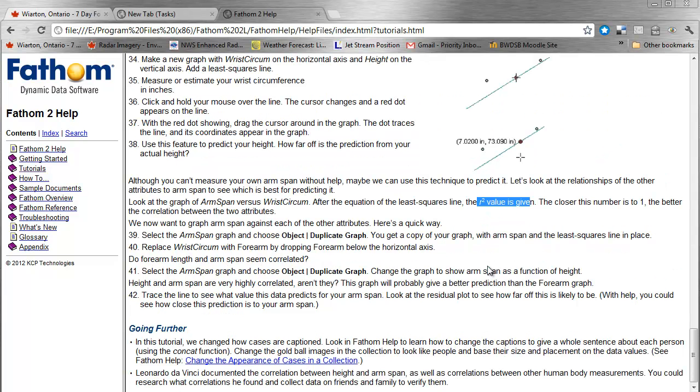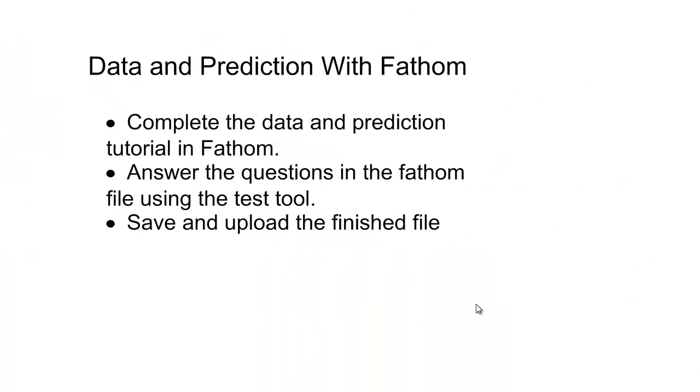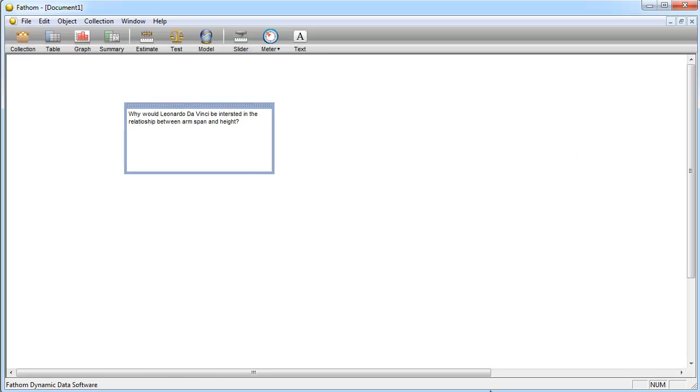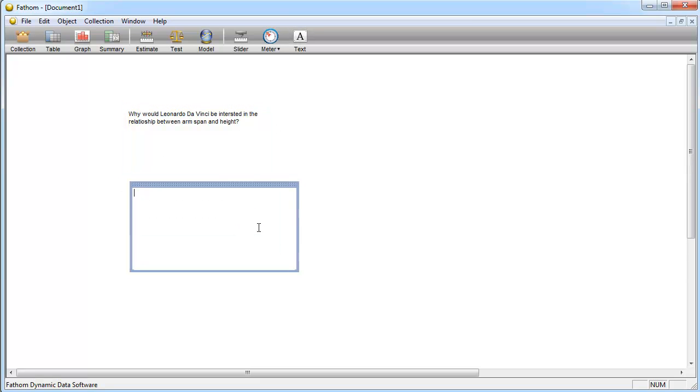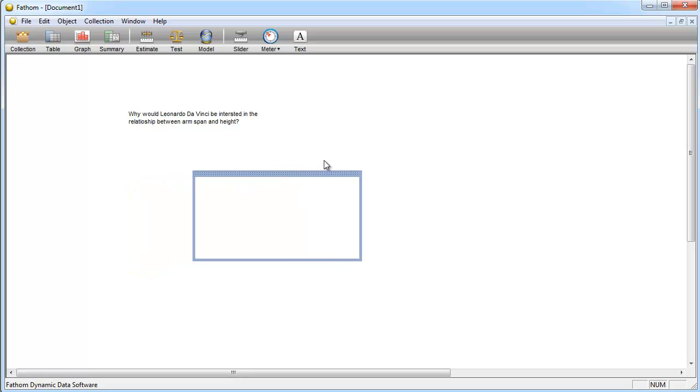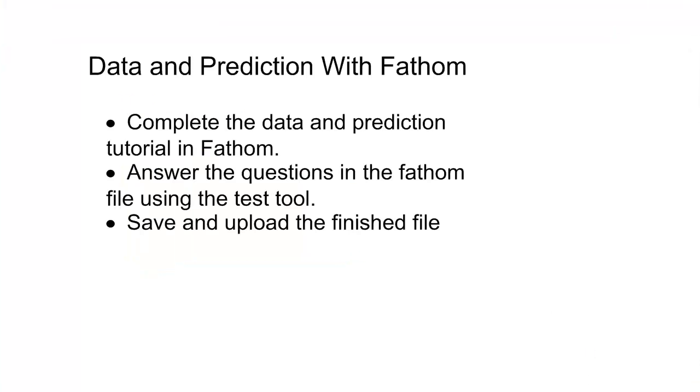It's pretty straightforward - I'd just like you to go and do this Fathom tutorial. When you're done, there are questions throughout. What I'd like you to do is grab the text tool and in your Fathom file, just answer the questions. Keep the graph that you create, and when you're done answering the questions, save and upload the finished file.